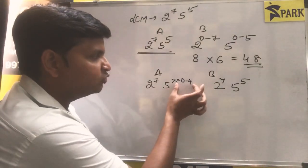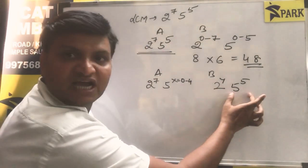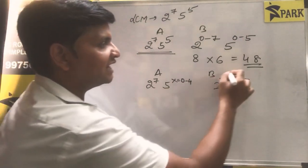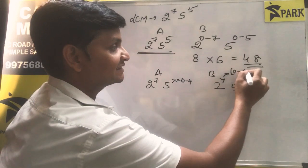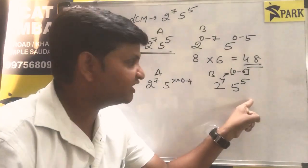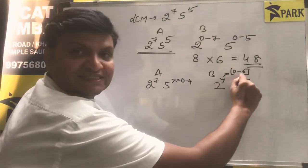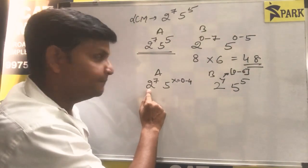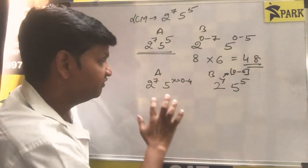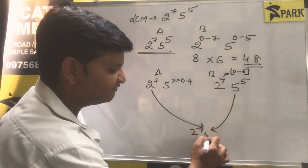If X is between 0 and 4, and the power of 5 in B is 5, then in the LCM the power of 5 will be 5 raised to 5. Similarly, Y can vary from 0 to 6. If Y were 7 (i.e., 2 raised to 7), all those cases are already counted. If the power of 2 is 0 to 6 in B and the power of 2 in A is 7, then the LCM's power of 2 will be 7. This means the LCM will effectively be 2 raised to 7, 5 raised to 5.